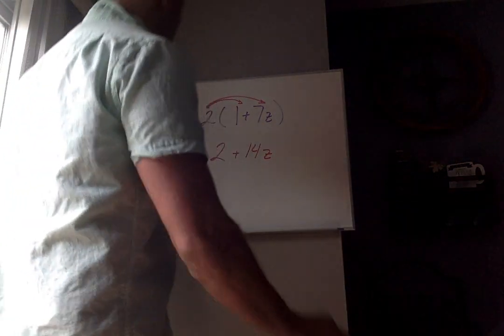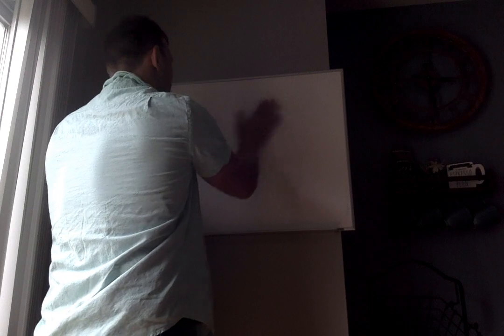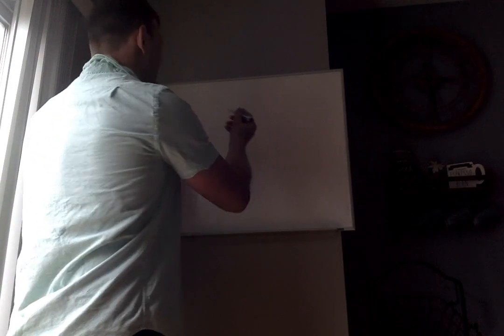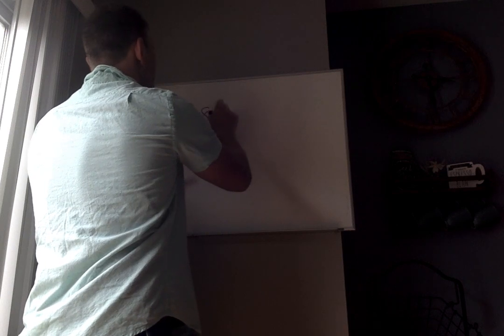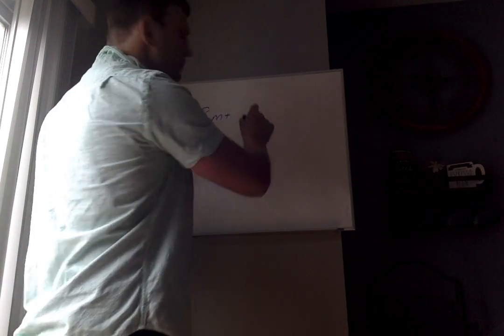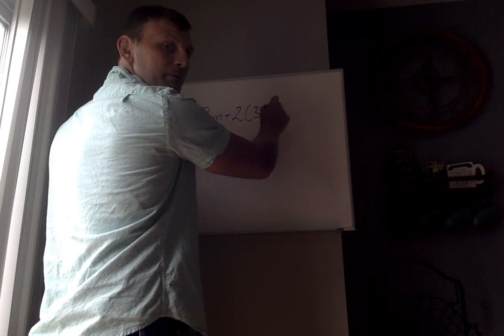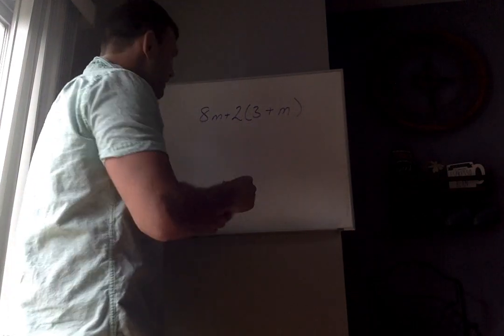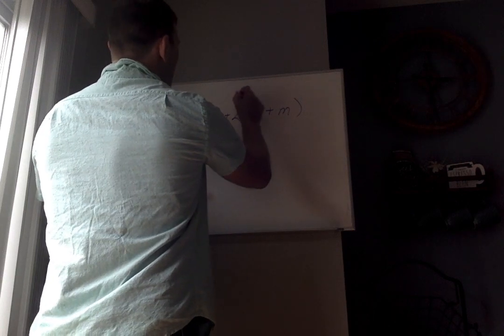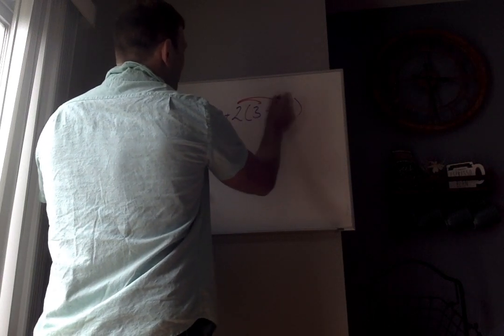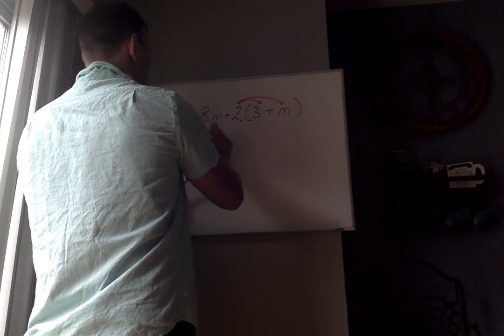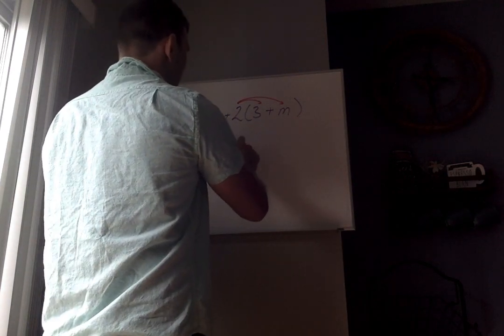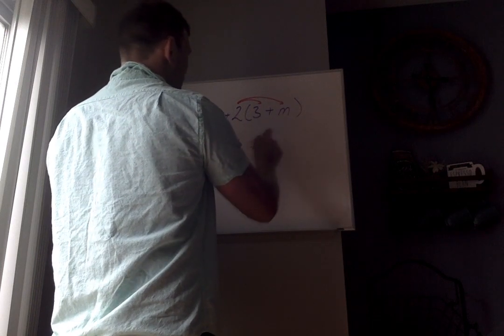All right, now I have problems a little different, so I'm going to go over this one as well. So we have 8m plus 2 times 3 plus m. So what I'm going to do here is the first thing I need is to distribute that 2. So I'm going to distribute the 2 to everything inside the parentheses. So this guy has nothing going on, so it's just 8m. He comes down. 2 times 3 is 6. 2 times m is 2m.